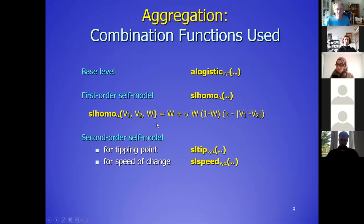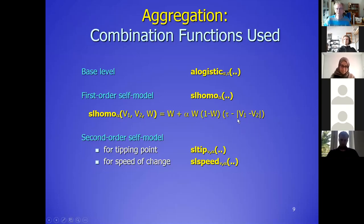This is the function for homophily — we already have seen that on Tuesday. It calculates whether there should be a positive contribution or a negative contribution to your w, to your connection weight. It is positive when the difference is small compared to the tipping point, and negative when the difference is big compared to the tipping point.